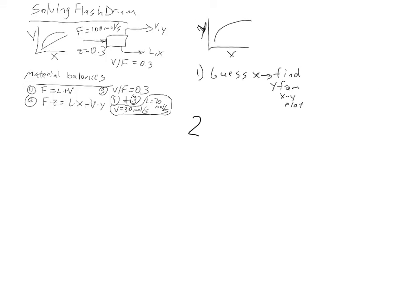Step two, plug XY guess into equation two. So that's our second step. Equation two is this one right here. That's just the material balance for the more volatile species. So what we'll do is we'll take our values that we've guessed for X and Y and plug them into this equation.